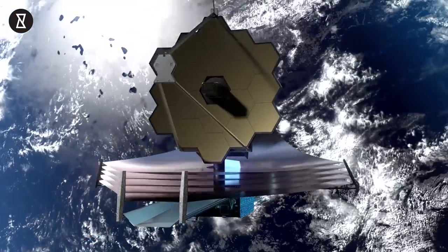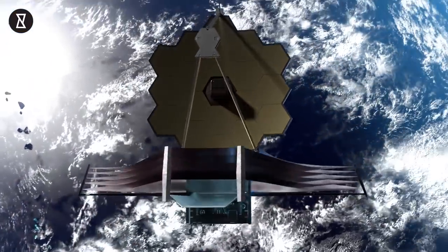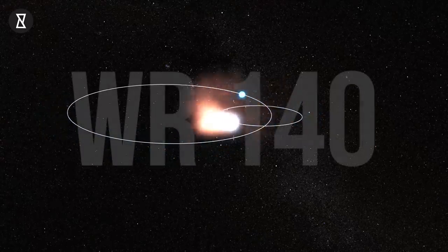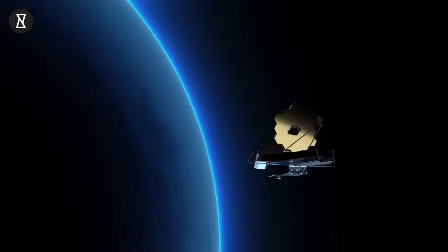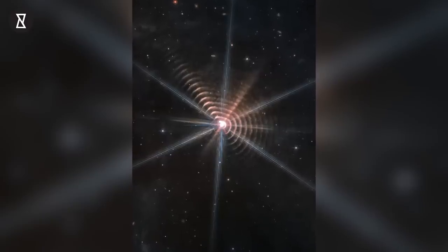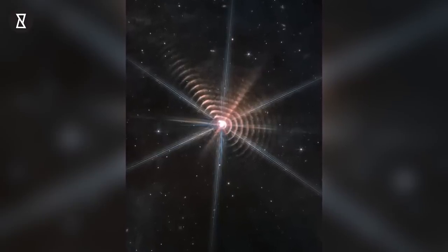This has happened because of a new photograph captured by the world's most powerful observatory of a distant star named WR140. The picture was taken using Webb's mid-infrared instrument in July and shows mysterious ripples tainted in slight red color around the star.